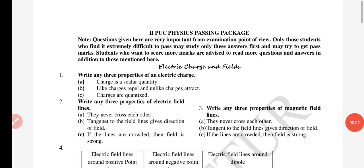Hello my dear students, this is the second piece of physics passing package. If you want to score 5 to 10 marks, this is a scoring package. We will note that questions given are very important from examination. Only those students who find it extremely difficult to pass may study only these answers first and may try to get passed marks. Students who want to score more marks are advised to read more questions and answers in addition to those mentioned here.